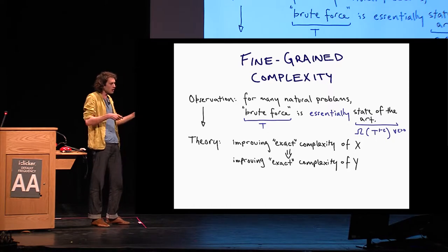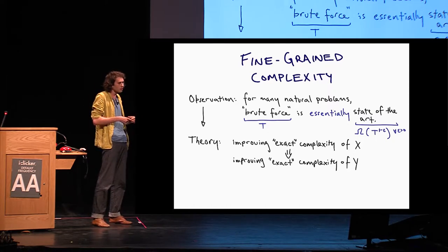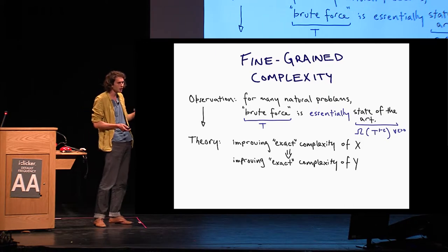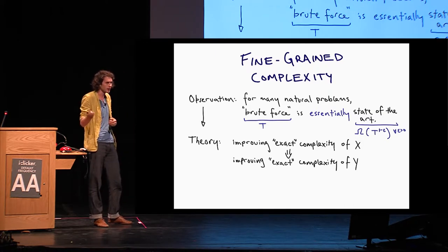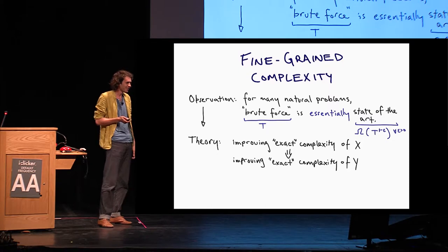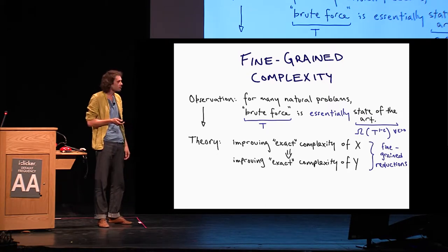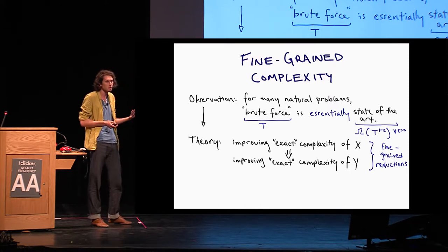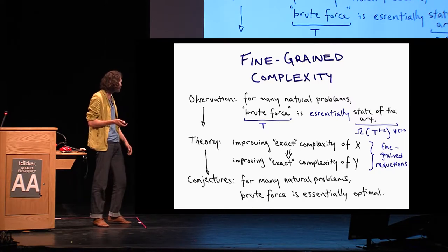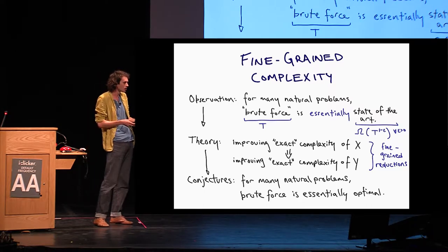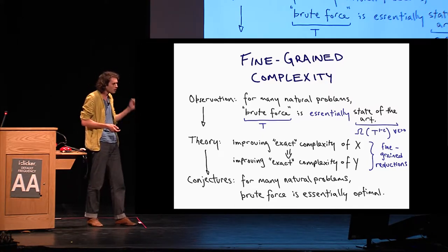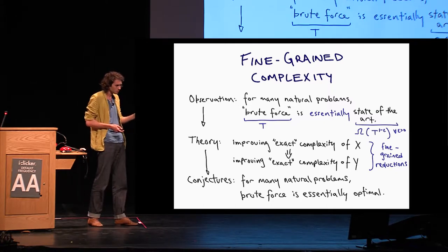And what do I mean by essentially? I mean that if brute force, like searching over the entire solution space, takes time t, then it's hard to shave off an epsilon factor. Even the best algorithms that we have fail to improve by this much. And so this is where this epsilon in the hardness definition is coming from, actually. This observation led to a theory where people, including Virginia, are proving statements of the form that if you can improve the exact complexity of a problem Y, then you can improve the exact complexity of a problem X, or vice versa.